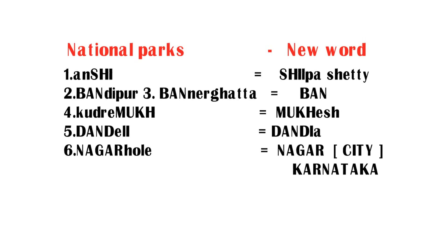Coming to the fifth one, Dandeli National Park — this word contains five capital letters D-A-N-D-I. Using these five letters I made the word 'Dandia.' Both words contain the same letters: D-A-N-D-I. So try to remember Dandeli National Park as Dandia. Coming to the sixth one, Nagarhole National Park — the first five capital letters are N-A-G-A-R, pronounced 'Nagar,' which means city. So try to remember Nagarhole as Nagar. In this way we have six new words in place of the national parks.